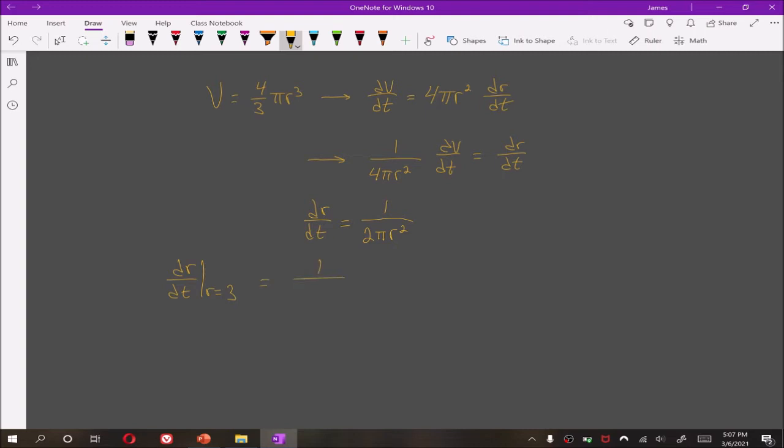This gives us 1/(2π × 9), which is 1/(18π). And the units are centimeters per second.